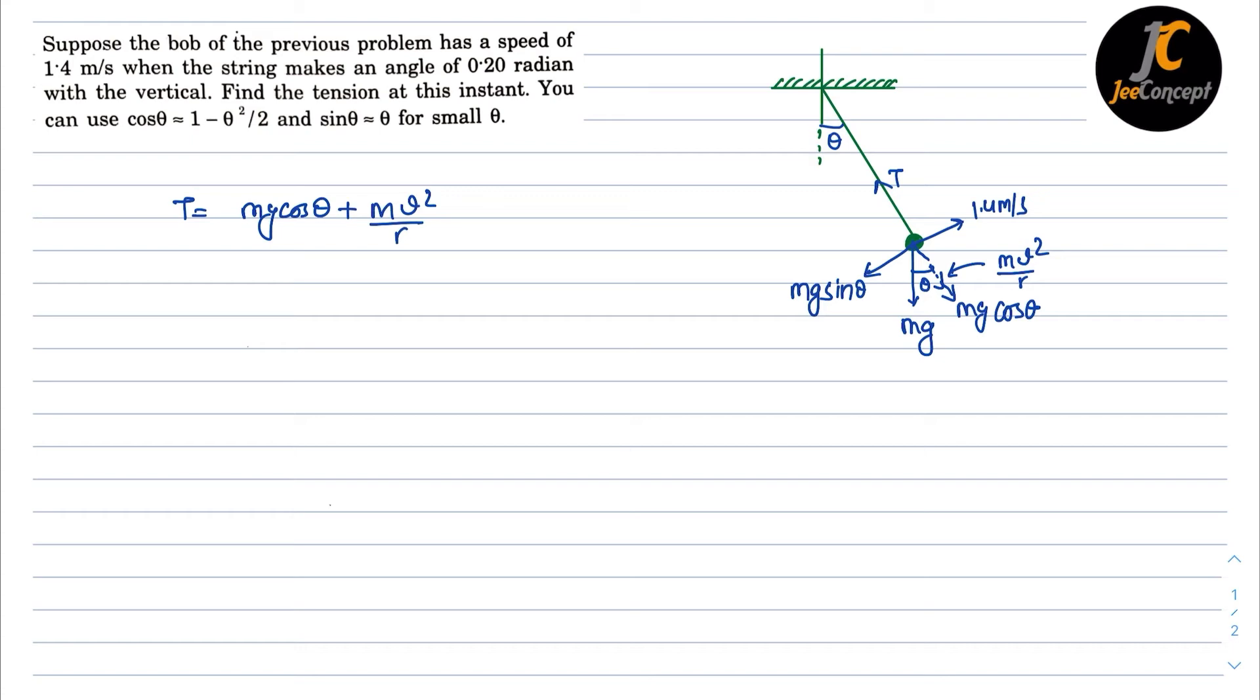From the previous problem, m equals 0.1 kg, velocity is given as 1.4 meters per second, and the radius was 1 meter. Now putting all these values here, T will become: m is 0.1, g is